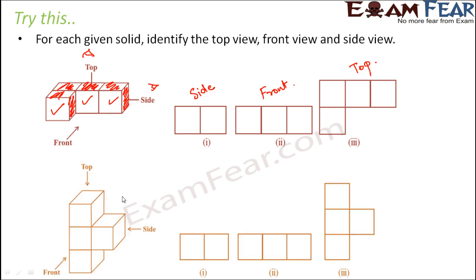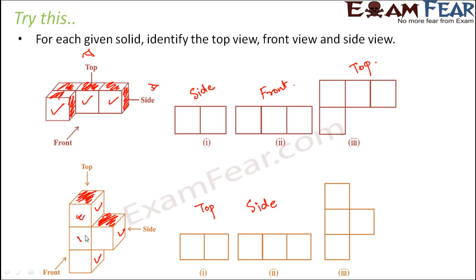Let's try another arrangement. From the top view, you see the square on top and another one also on top — so two squares. From the side view, you see the squares facing the side: three squares in total. From the front view, you see four squares. So the top view is two squares, the side view is three squares, and the front view is four squares.